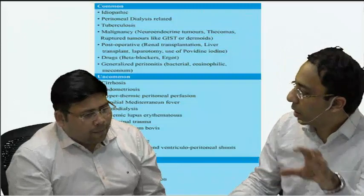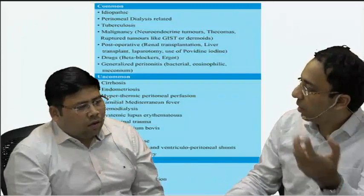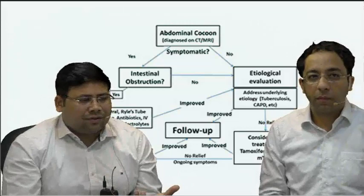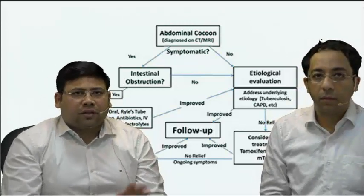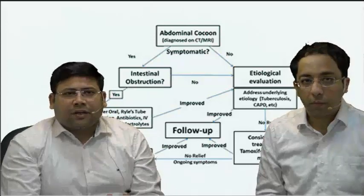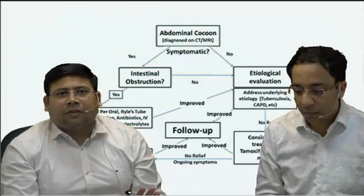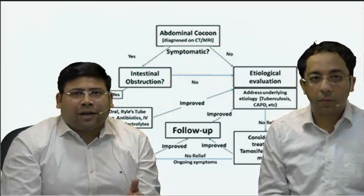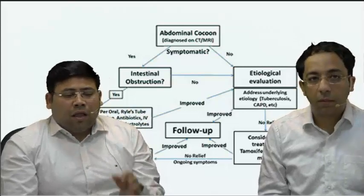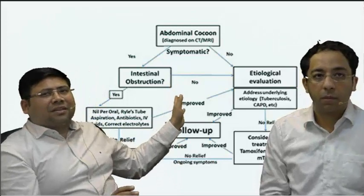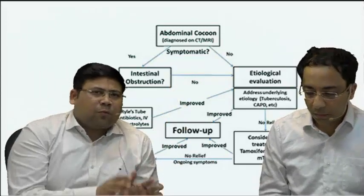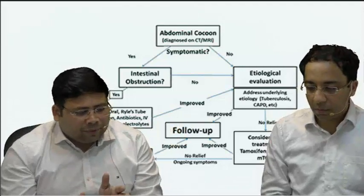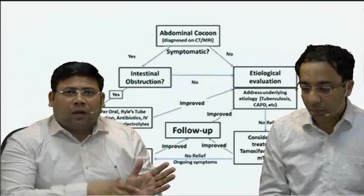How would you manage a patient with abdominal cocoon — and if it is tubercular, how would you manage? Whenever we have a patient with intestinal TB or a cocoon in general, the first thing is to rule out whether the patient has obstruction. If there are signs of intestinal obstruction, don't rush for laparotomy at the very first go. Admit the patient, start conservative management: NPO, nasogastric tube decompression, antibiotics, and correct the electrolytes — basically resuscitate the patient. If the patient responds, then address the underlying cause.